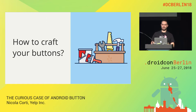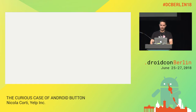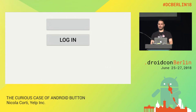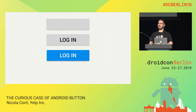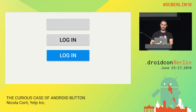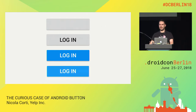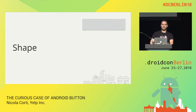To start crafting your buttons, you basically need to go through four main steps. The first one is thinking about the shape — how you want your button to look. Then we have typography — what about the text we put inside? Then we have hierarchy — what's the role of your button within your screen? And then we have feedback — how the button will react whenever the user interacts with it. Let's start with the first one: shape.